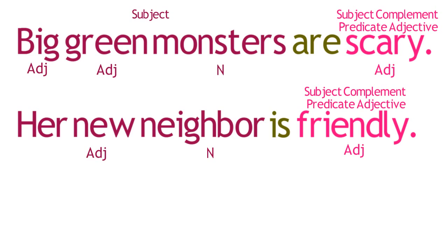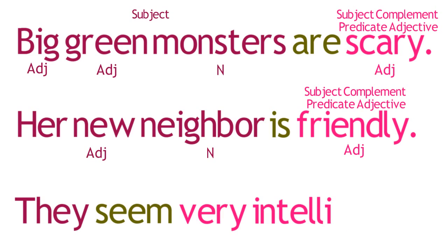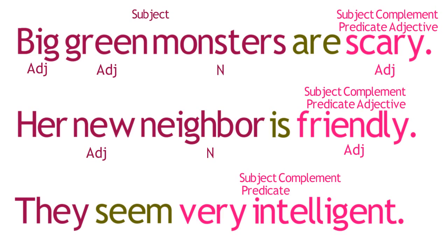As a final example, this sentence has only one adjective, the predicate adjective Intelligent, which modifies and is dependent upon the pronoun They. Notice that in this case, the adjective modifies a pronoun rather than a noun. This is common in sentences with a predicate adjective.